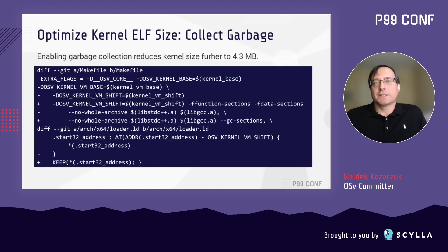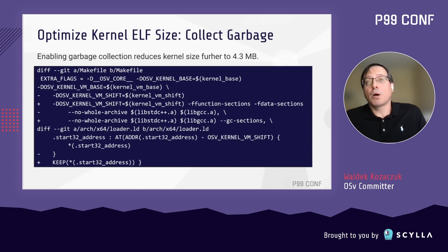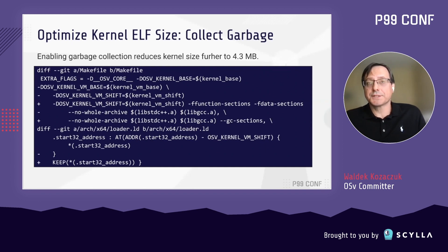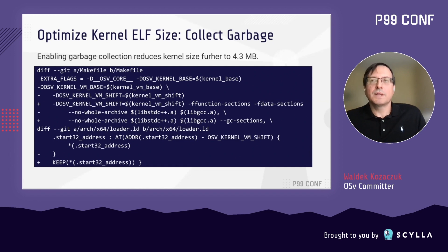Even after hiding the C++ library, there's still some code left that is not referenced by anything during runtime. This code garbage can be eliminated by the garbage collection mechanism in GCC. By adding relevant compiler and linker flags to the makefile, as well as necessary KEEP statements to the linker script, I was able to reduce the kernel size from 5 to 4.3 megabytes — another ~10.5% decrease.